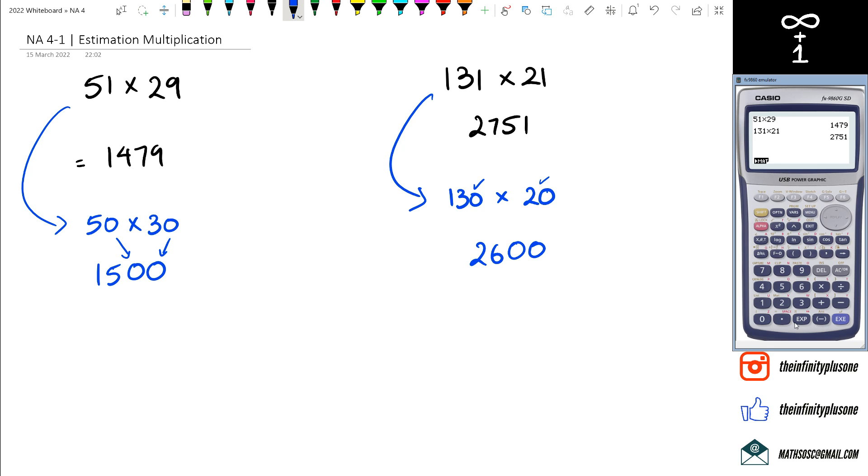Now there are people that argue, well we only want to have like one significant figure. Sometimes people do this as well - remember these are all estimations, not right answers. Some people say that 131 is closer to 100, and then 21 is close to 20, so you end up with an answer of 2000.